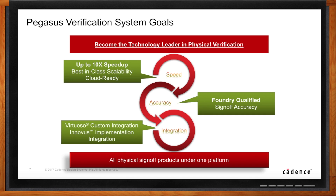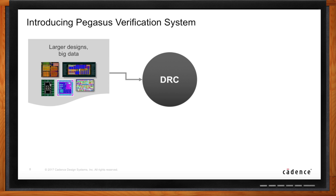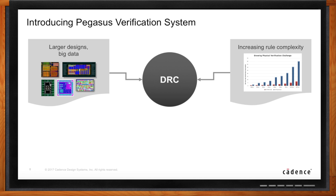We started working on Pegasus four years ago, looking at three major angles. First, large design sizes that keep increasing — at the latest nodes you can see 1.5 billion instances, which is a huge amount of data. Second, increasing rule complexity that's not going to stop — even with EUV reducing coloring, the complexity today is already overwhelming for current solutions. Third, efficient utilization of large CPU farms.